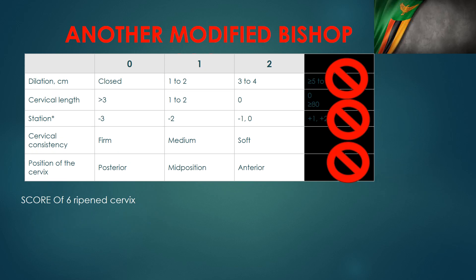Unfortunately, there is another modified Bishop Score. This version removes the score of three and fits everything into scores of zero or two, meaning the maximum total score is 10, unlike the regular Bishop Score whose maximum is 13. The dilatation and cervical length parameters are similar; you mainly need to remember station, consistency, and position of the cervix, which are the same as before. For this score, above six means the cervix is favorable, and below six means unfavorable — favorable meaning your induction success rate will be very similar to spontaneous labor.